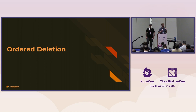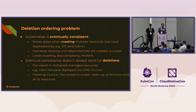That was the intro session — a high-level overview of everything Crossplane can do. Now we're moving into the deeper dive, talking about new stuff in 1.14, which was literally our biggest release ever. First up: ordered deletion. That's something people have asked for a lot, especially in production and enterprise usage.